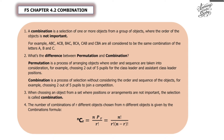In this video we're going to learn about combination. A combination is a selection of one or more objects from a group of objects where the order is not important. For example, ABC, ACB, BAC, BCA, CAB, and CBA are all considered to be the same combination of the letters A, B, and C.